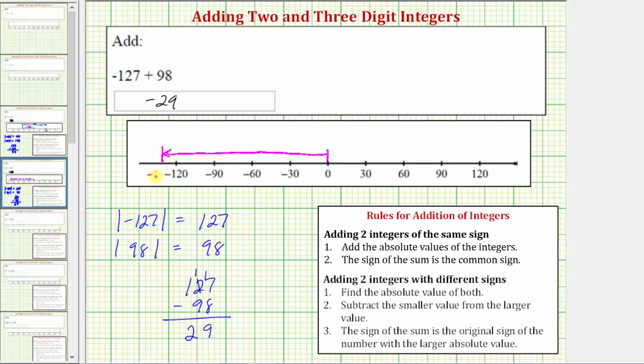So here's negative 127, and then from here we're adding 98, and therefore from here we move right 98 units, which takes us back to negative 29. So moving right 98 units would take us one unit to the right of negative 30 to negative 29.